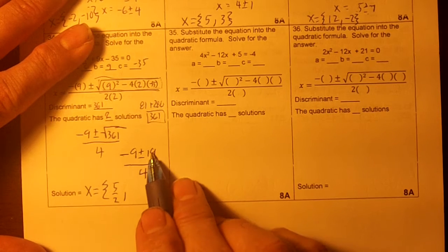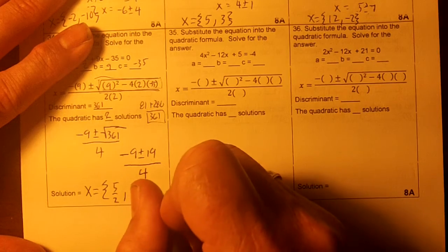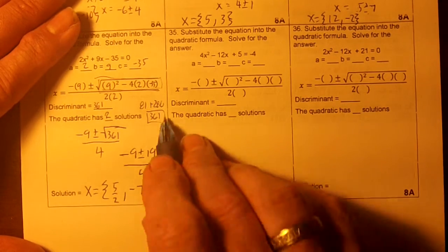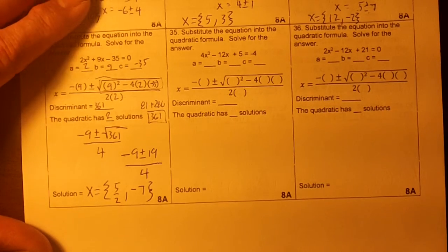Negative 9 minus 19 is negative 28. Negative 28 divided by 4 is negative 7. So these would be my two zeros used in the quadratic formula. Wow! How much fun can you have?